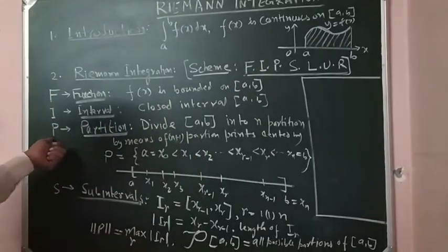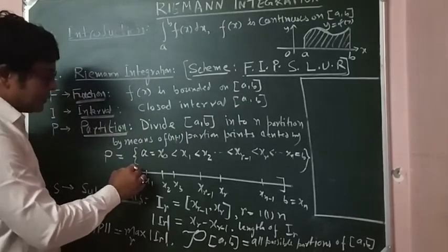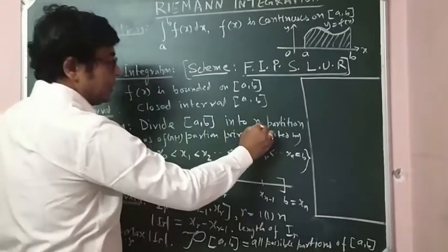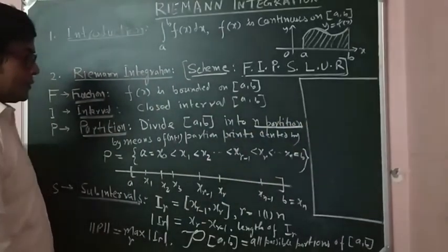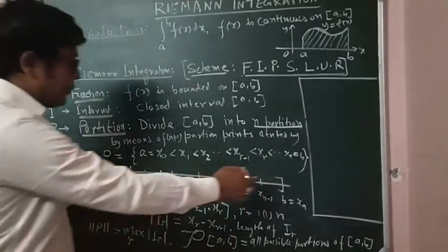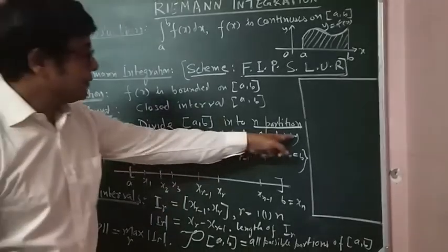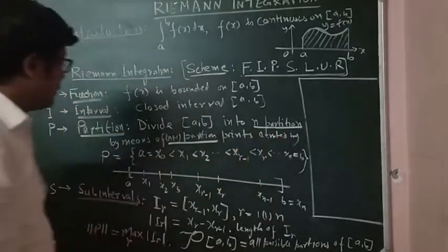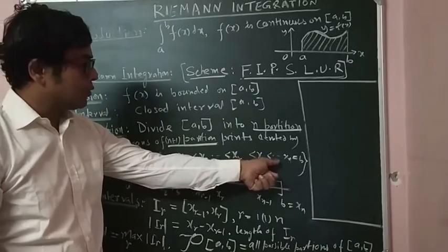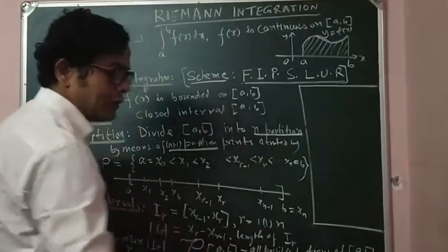What is P? P we are defining as the partition. What is partition? Partition is that we have taken this interval [A, B] and we divide this closed interval [A, B] into N subintervals. These subintervals can be met by means of N+1 partition points, denoted by A = X₀ < X₁ < X₂ < ... < X_{R-1} < X_R < ... < X_N = B. That is, these points are in order. Next, we define S.